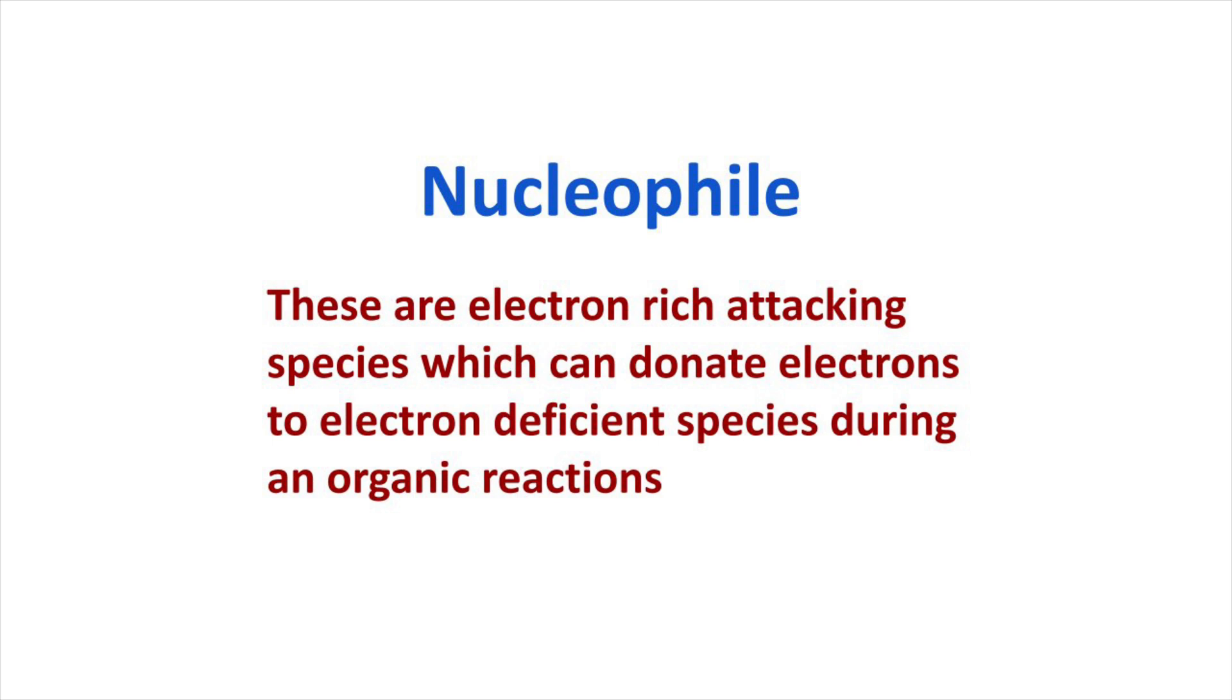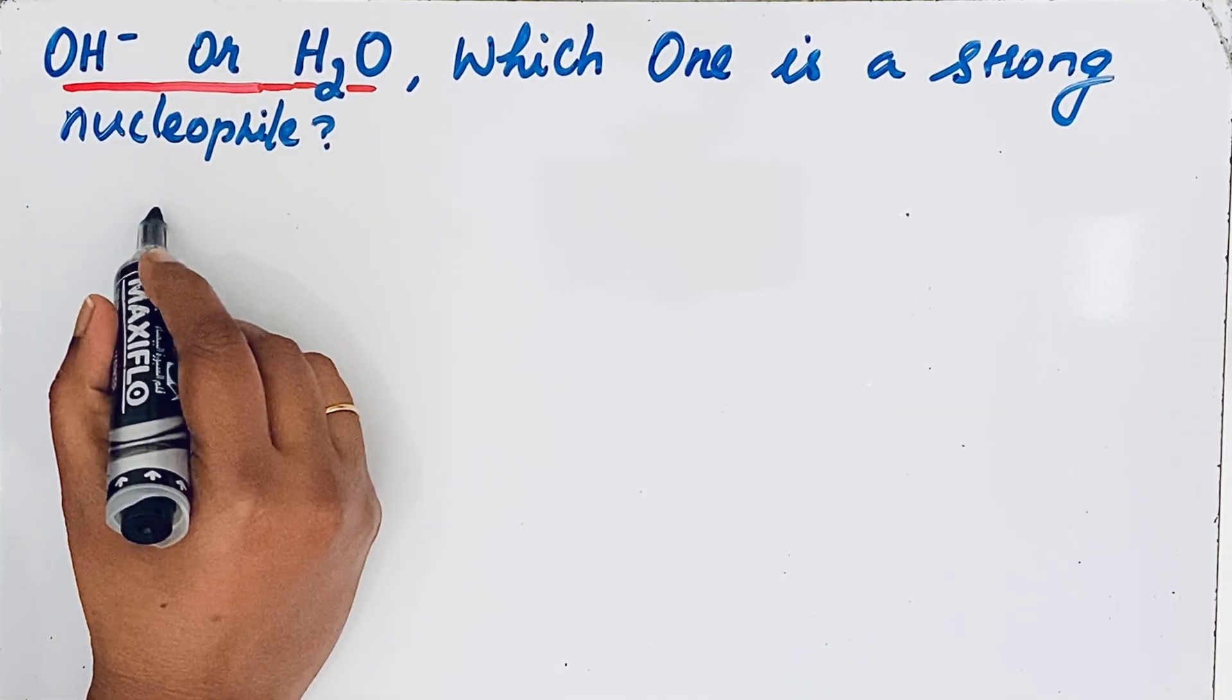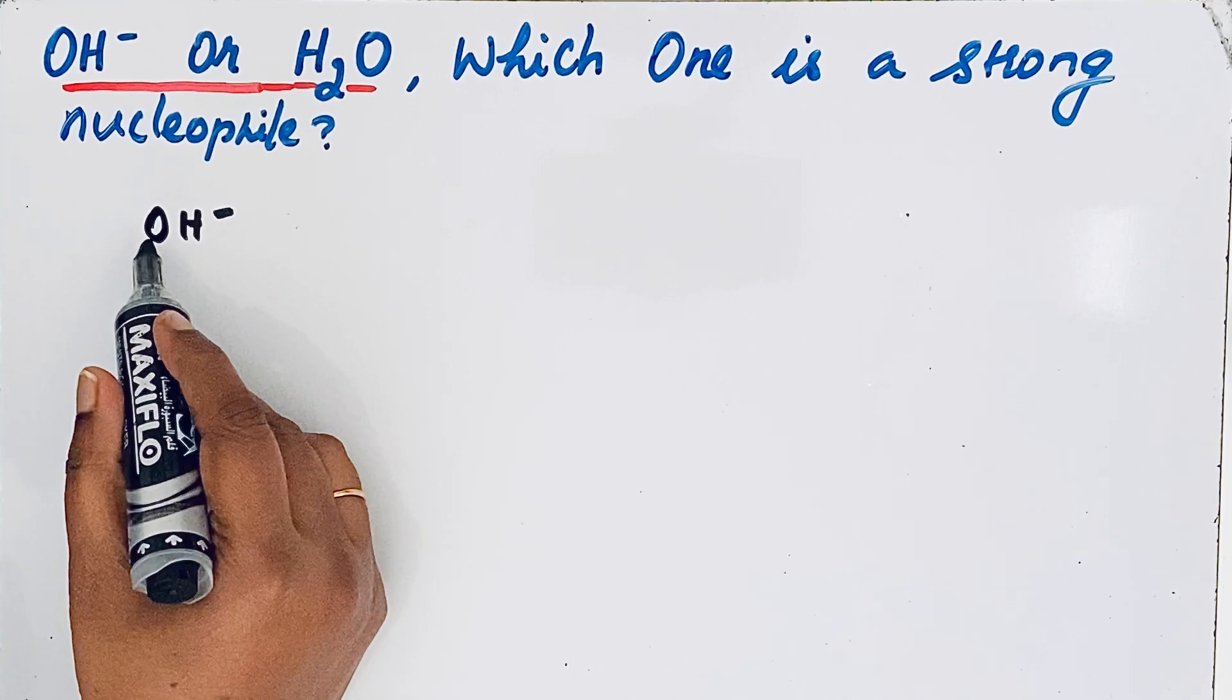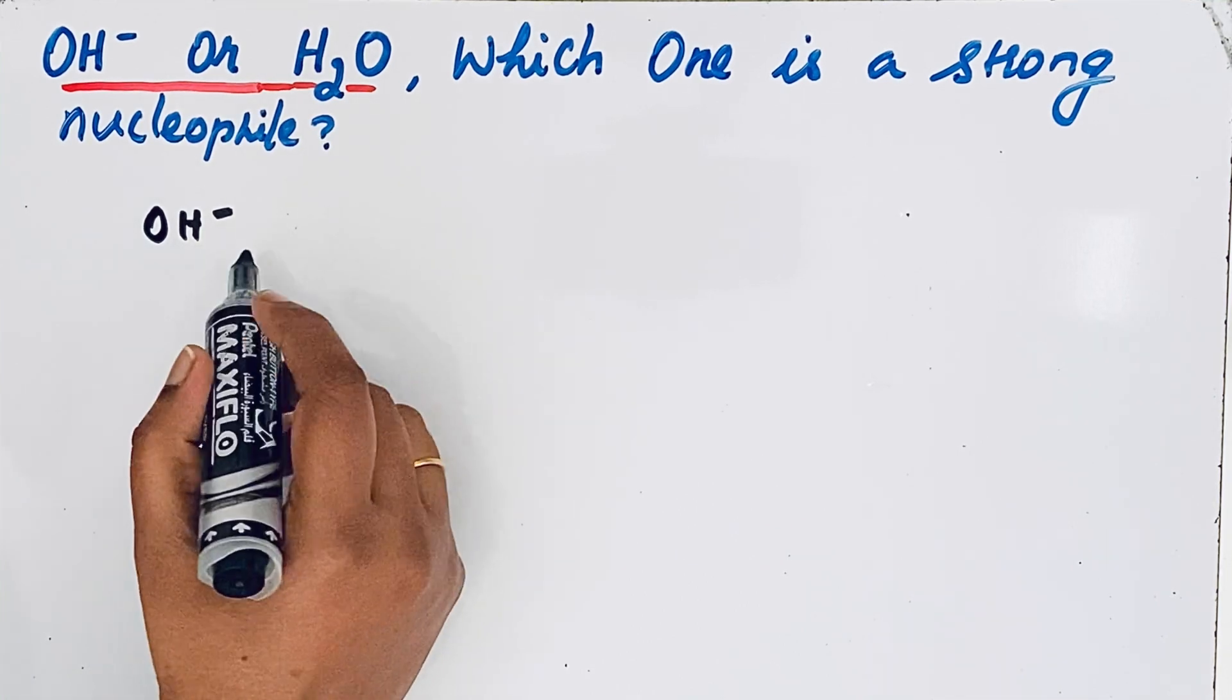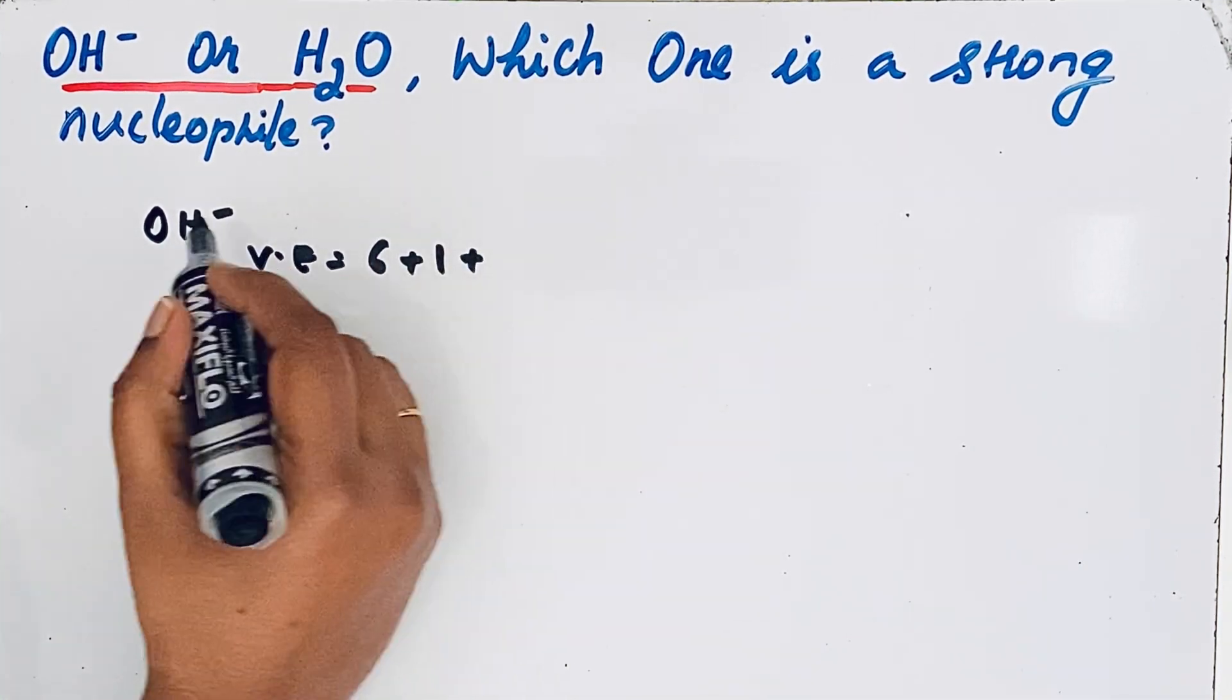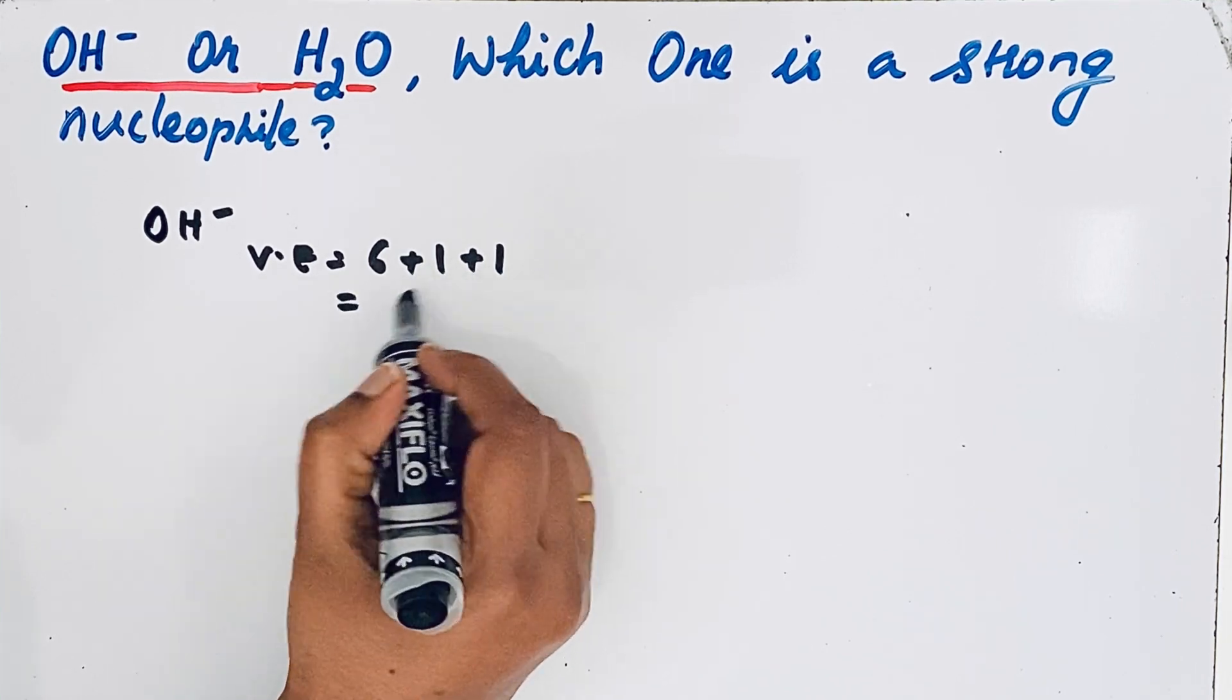To find out which one is the strong nucleophile, first let us draw the Lewis structure of OH- ion and H2O. So OH- ion is a polyatomic ion which carries a minus charge. Oxygen valence electrons: 6. Here we have only one oxygen, so valence electron 6 plus one hydrogen, valence electron 1. Then it carries a minus charge, so we should add 1. 6 plus 1 plus 1 equals 8.